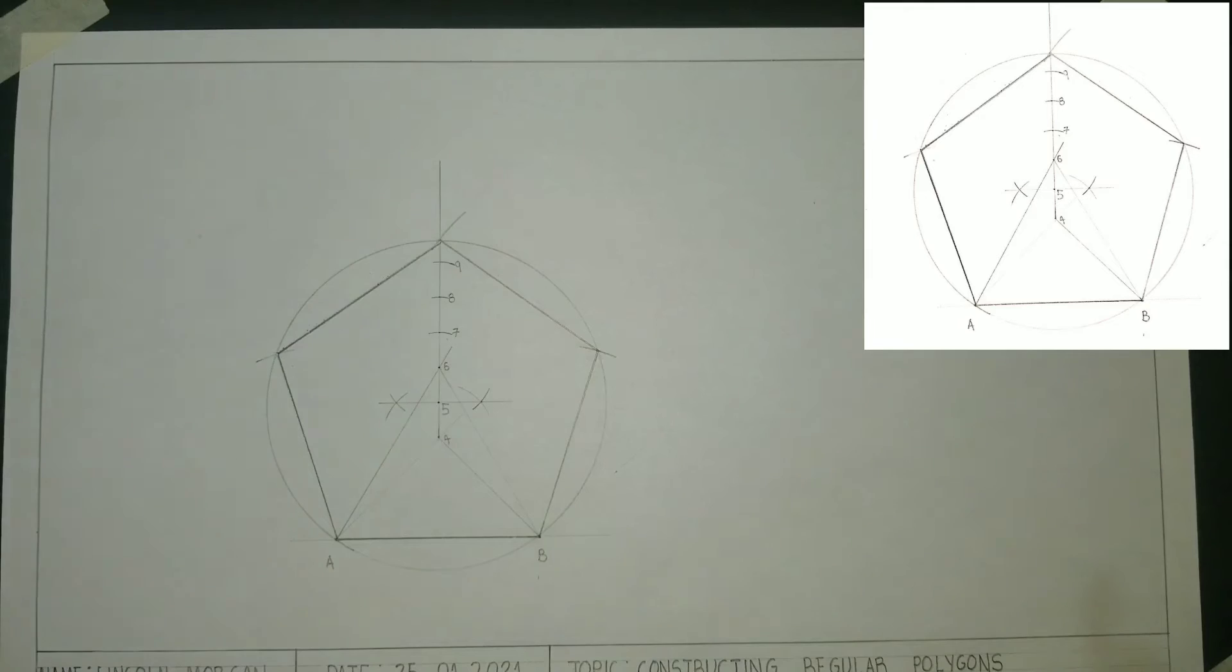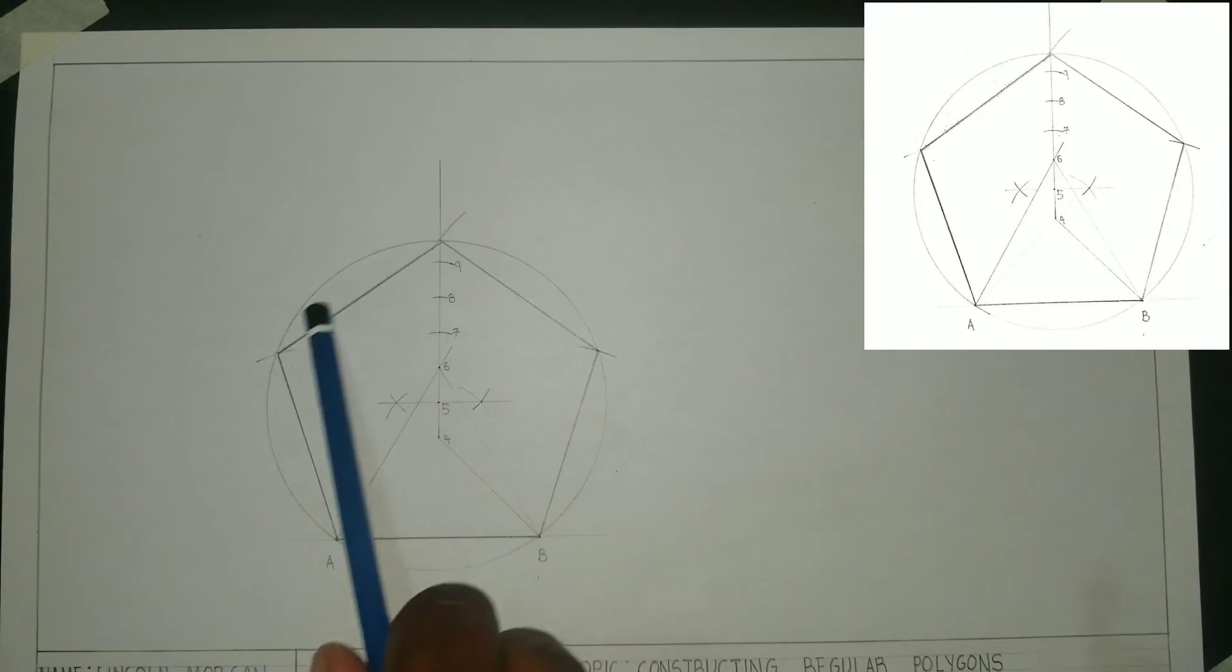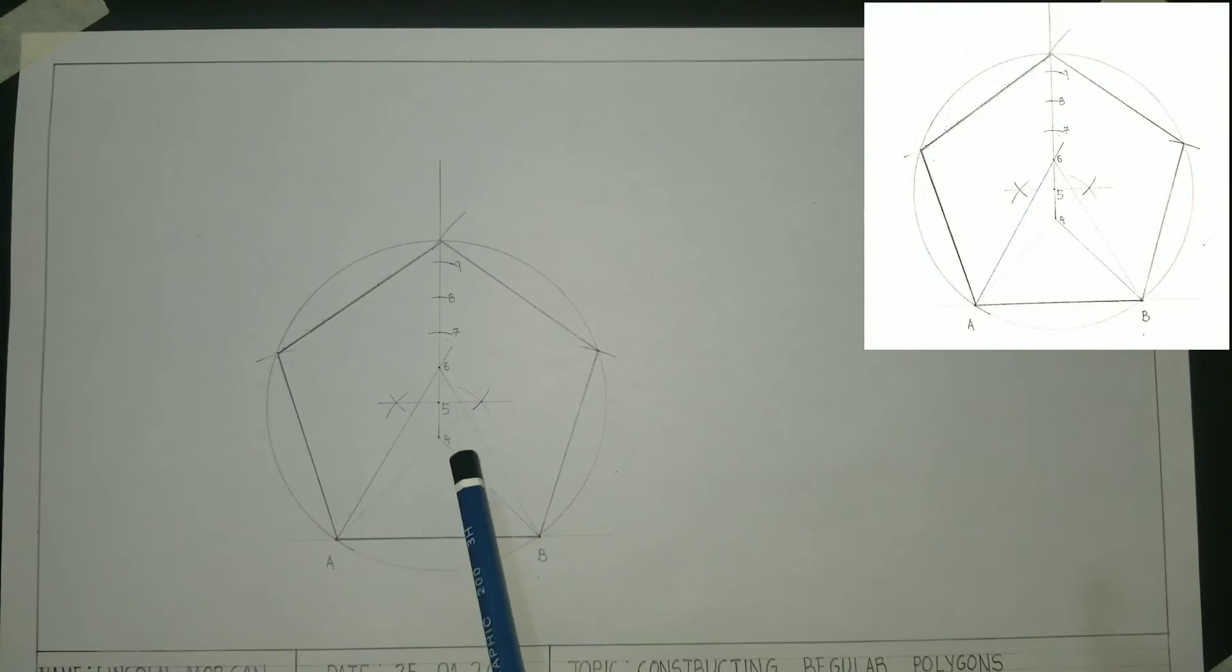Now we have our regular pentagon where the length of all sides are equal. This is a method we can use to construct any given polygon.